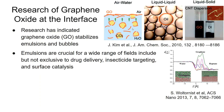Emulsions and bubbles play a crucial role in a wide range of fields, including but not exclusive to drug delivery, insecticide targeting, and surface catalysis. In the figure above, you can see that graphene oxide has been used to stabilize air-water, liquid-liquid, and liquid-solid interfaces. In the case of air-water, you can see that the graphene oxide helps to stabilize CO2 bubbles in water. In the liquid-liquid case, it helps to stabilize oil and water, and in the liquid-solid case, it helps to stabilize dispersion of an insoluble material throughout deionized water.